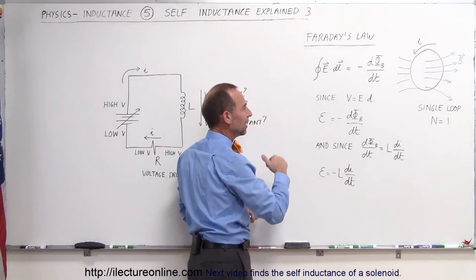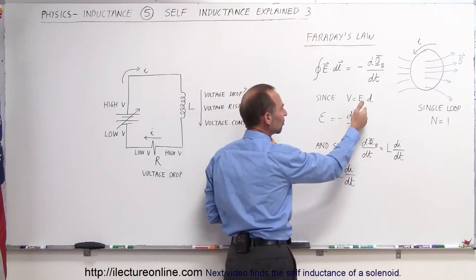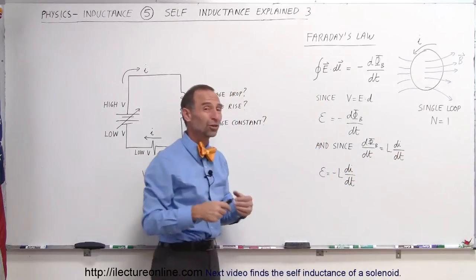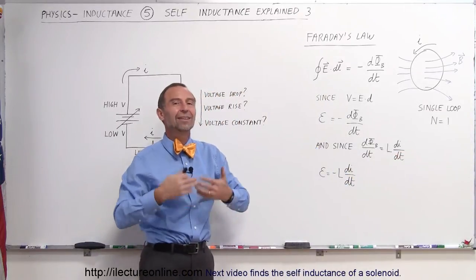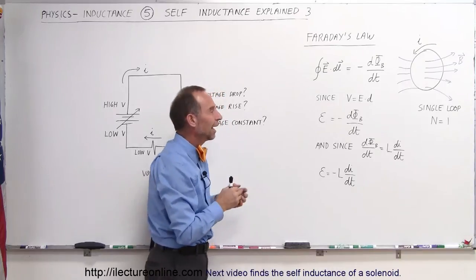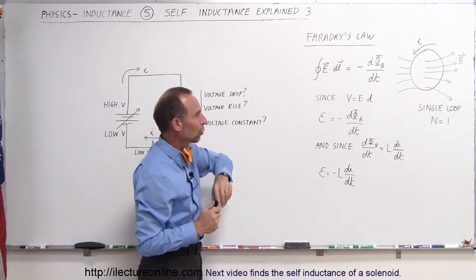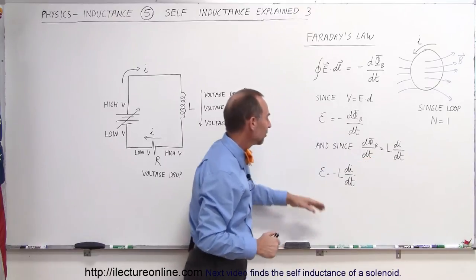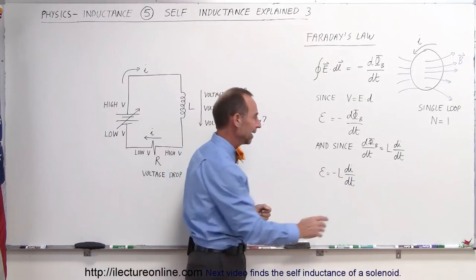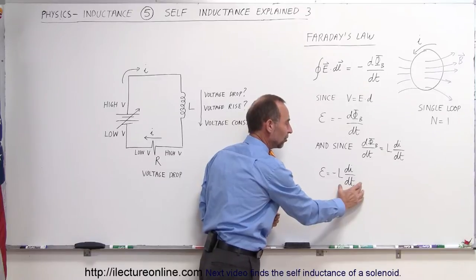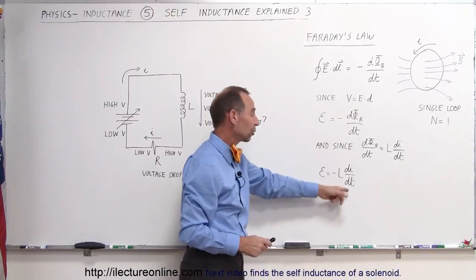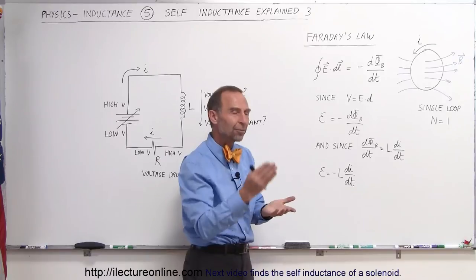Now we know where this equation came from. We can also say that the change in the flux per unit time is equal to the self-inductance times the change in the current per unit time, because what causes a change in the flux is the self-inductance and the change in the current. Since we can equate the two, we can say that the EMF induced is equal to the negative of the self-inductance times the change in the current per unit time. If the current increases, then the EMF induced is negative. If the current decreases, then the EMF induced is positive — it's always the opposite sign.